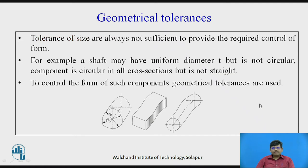We have seen dimensional tolerances. Dimensional tolerances deal only with the dimensions — what kind of value is required or can be achieved. Tolerance is an allowable limit; it is an allowable value given to a manufacturer so that a particular component can be manufactured with that particular tolerance.